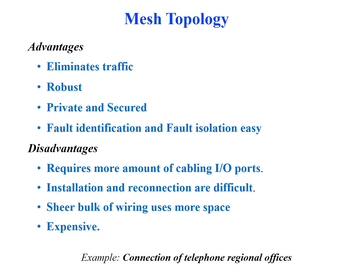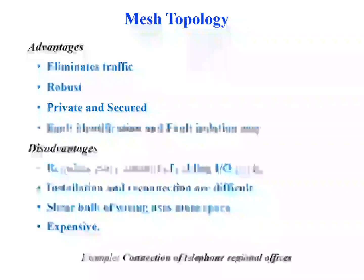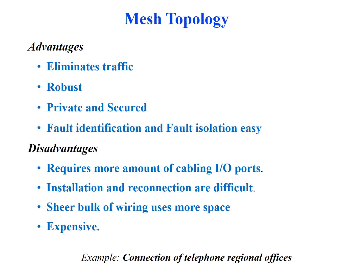The advantages of a mesh: the use of dedicated links guarantees the elimination of traffic problems — there will be no traffic congestion during transmission. Failure of one link will not affect the transmission of others, so mesh topology is robust. Since every message travels through a dedicated path, transmission between devices will be private and secure.